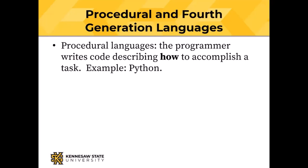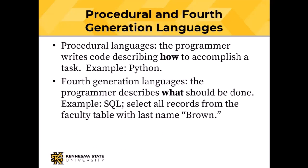There are two kinds of language translators covered so far: assemblers, producing one machine instruction per line of code; and compilers, where one line generates multiple machine instructions. A procedural language is one where the programmer writes code describing how to accomplish a task — Python is procedural. A fourth-generation language, like SQL, is where the programmer describes what should be done, not how. You don't have to care how it happens, only what the result is.